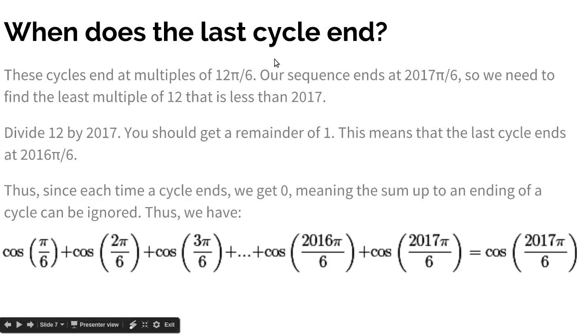So when does the last cycle end? So we know that one cycle ends at 12π/6. And then the next cycle would end at another 12 terms, so that would be 24π/6. And another cycle ends after another 12 terms, so 36π/6. So they all end at multiples of 12. However, our sequence ends at 2017π/6, which is not a multiple of 12. So we need to find the least multiple of 12 less than 2017. If we divide 2017 by 12, you should get a remainder of 1. So that means subtract 2017 by the remainder, and we get a multiple of 12. So 2016π/6 is when the last cycle should end, since 2016 is the least multiple of 12 less than 2017.